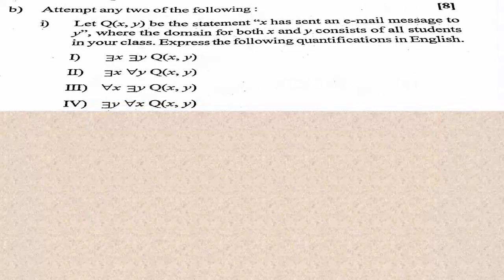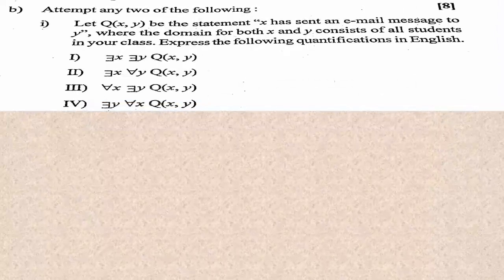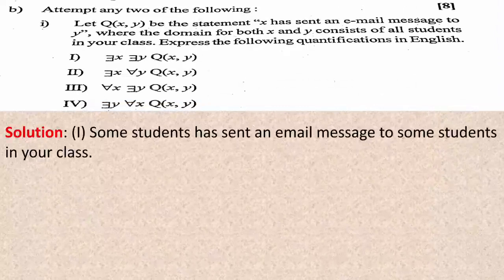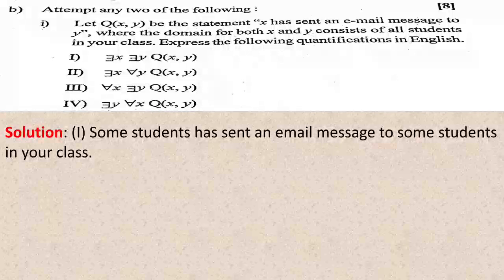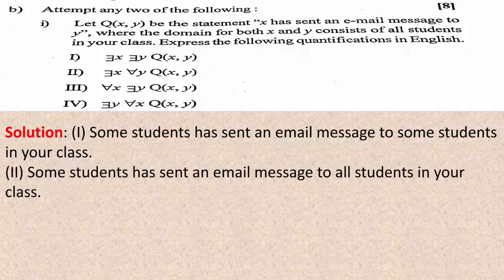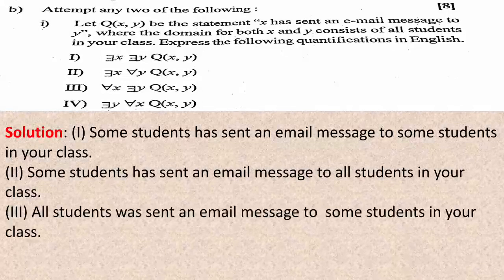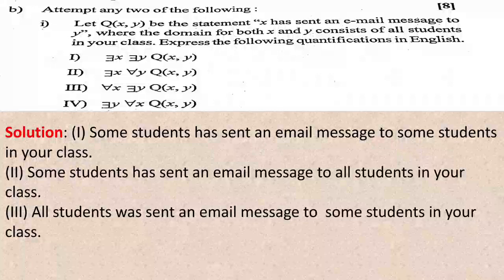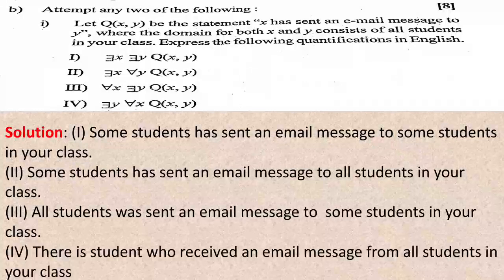Part B: attempt any two of the following. Let Q(x,y) be the statement 'x has sent an email message to y' where the domain consists of all students in your class. Express the quantifications in English: ∃x∃y Q(x,y) means 'some student has sent an email message to some student in your class.' ∃y∀x Q(x,y) means 'there is a student who received an email message from all students in your class.'